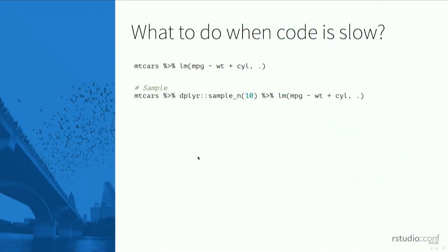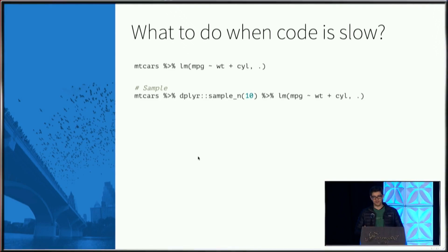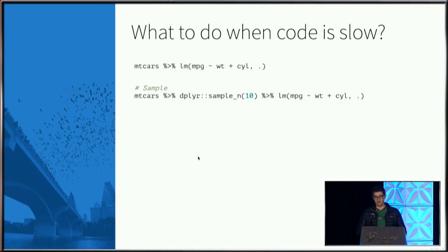One technique you can use is just sample data. If you have a lot of data, you can reduce the amount of data that you have. As long as you do it properly, you can use techniques like statistical sampling to reduce the amount of data, and that's definitely progress in the right direction.